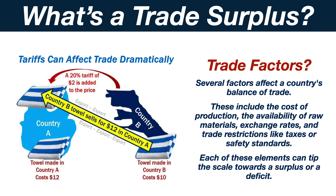Several factors affect a country's balance of trade. These include the cost of production, the availability of raw materials, exchange rates, and trade restrictions like taxes or safety standards. Each of these elements can tip the scale towards a surplus or a deficit.